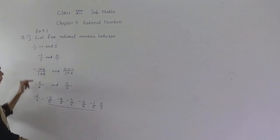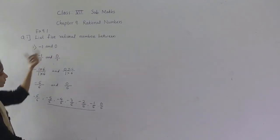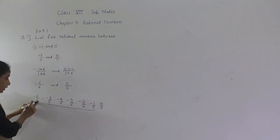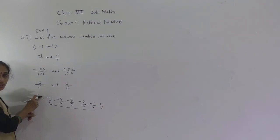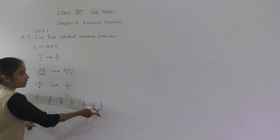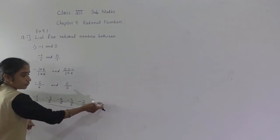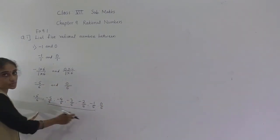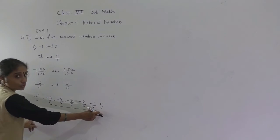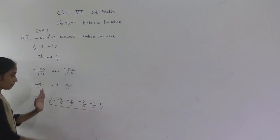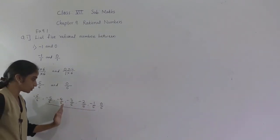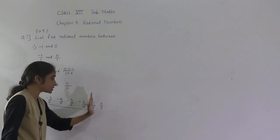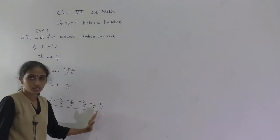You might say we want numbers between minus 1 and 0 — but if you do the reduced term for minus 6 upon 6 you get minus 1, and for 0 upon 6 you get 0. So the 5 rational numbers between minus 1 and 0 are: minus 5 upon 6, minus 4 upon 6, minus 3 upon 6, minus 2 upon 6, minus 1 upon 6.